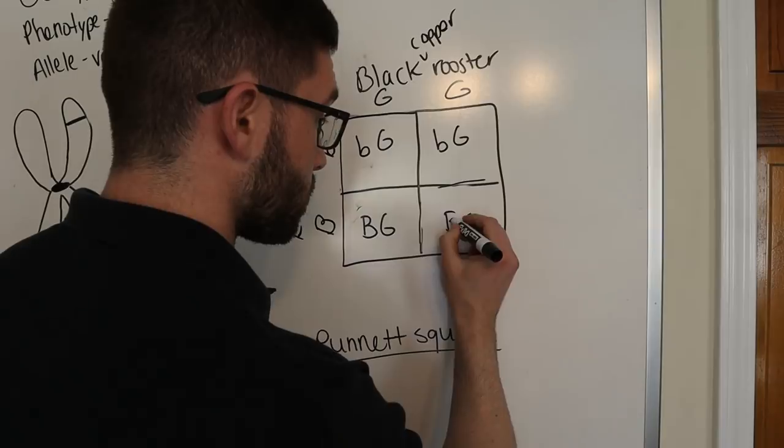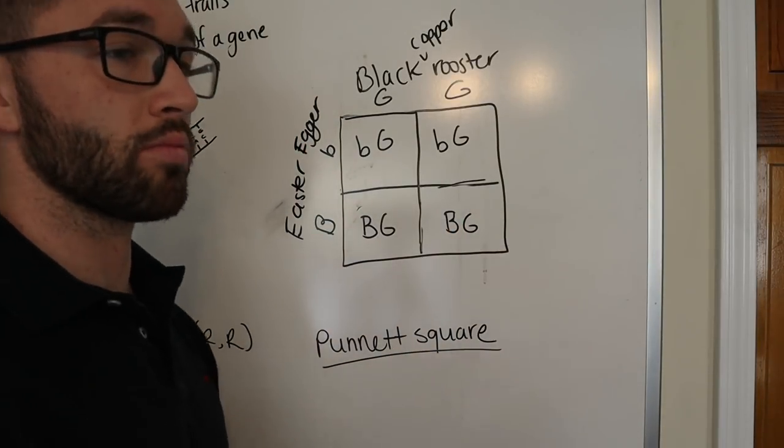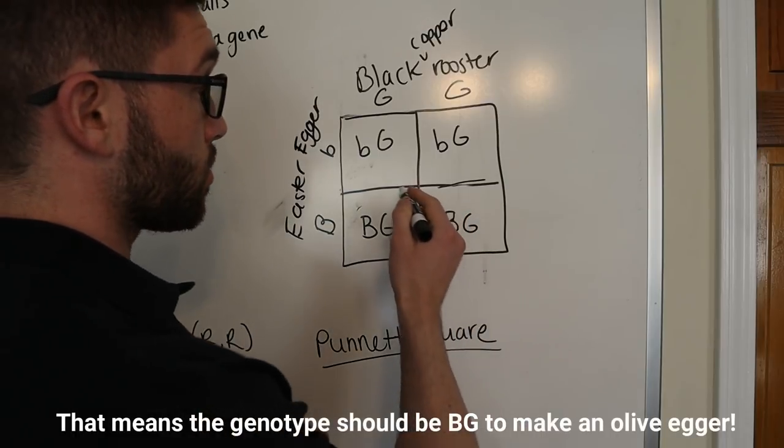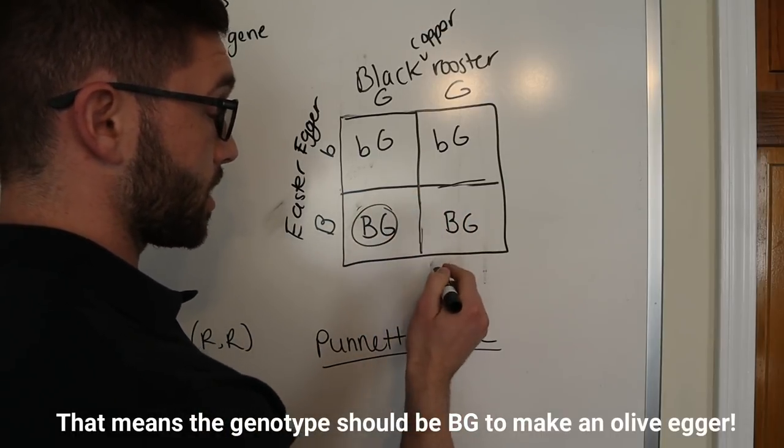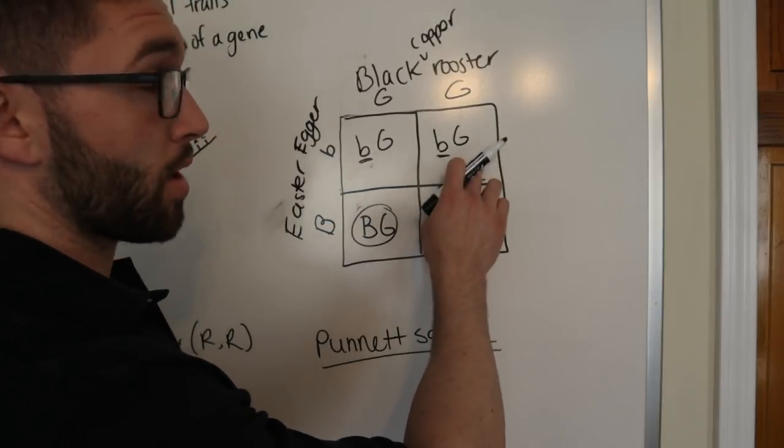And so, in order for it to be an olive egger, like I said, it has to inherit one brown and one blue egg gene. And so, in this case, it does. In this case, it does. But in these two cases, it only contains brown egg genes.